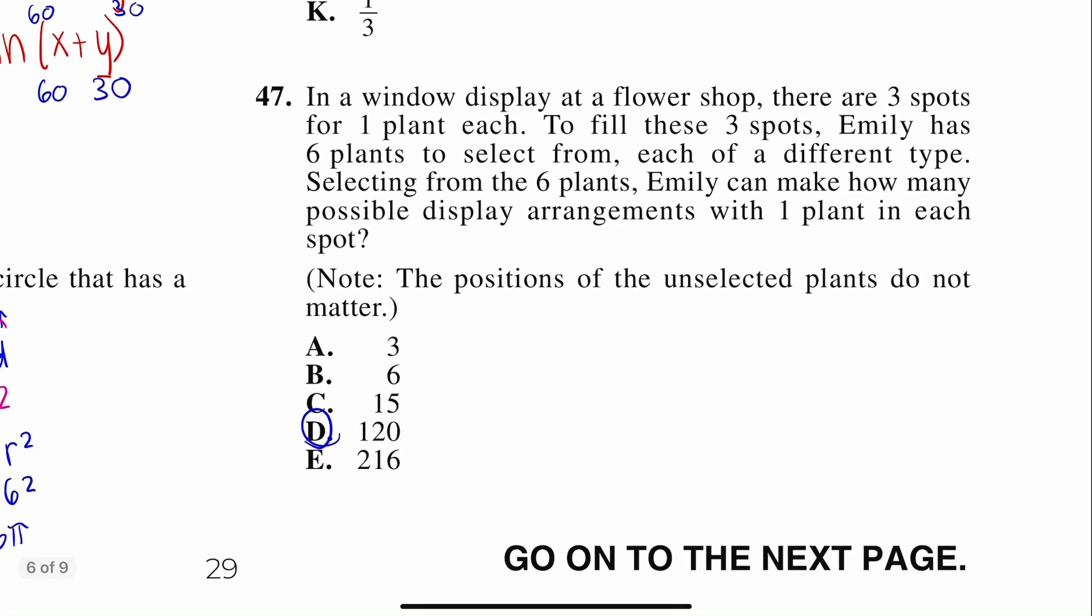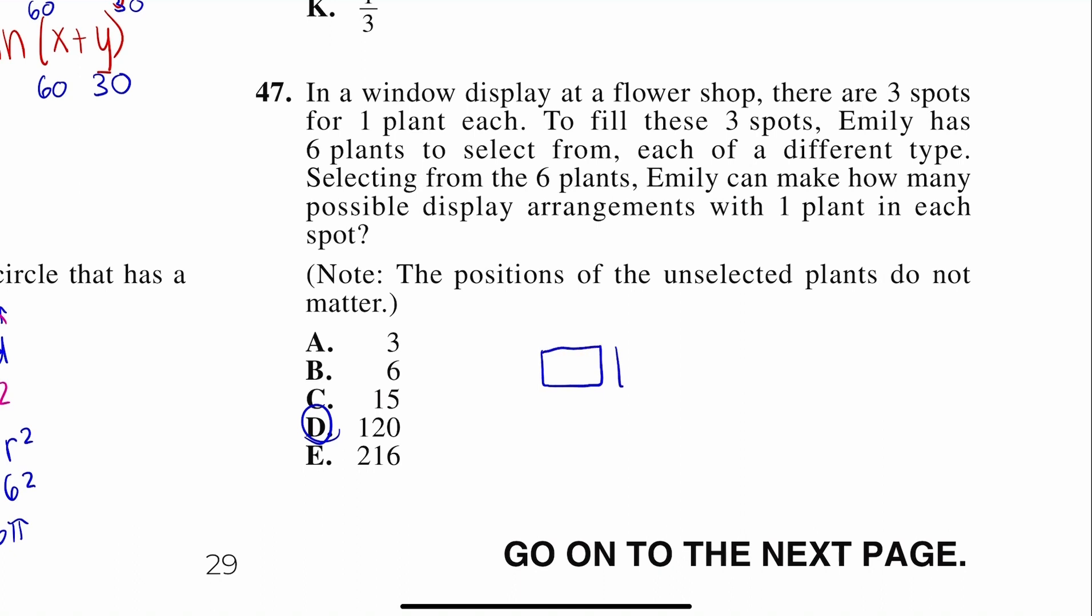Last one. In a window display at the flower shop, there are three spots for one plant each. So here's my little window display. One, two, three. So my little plants go there. To fill these three spots, Emily has six plants to select from, each a different type. Selecting from the six plants, Emily can make how many possible display arrangements with one plant in each spot. Note the positions do not matter. That's important. So in this first box right here, she has six plants she can plant there. So she picks one, she puts it in. She picks a tulip. Here's my tulip. So now for this next box, she only has five plants left. She picked a sunflower. Here's my sunflower. So for this last box, she has four options left. So let's go ahead and multiply those. Six times five times four is 120.